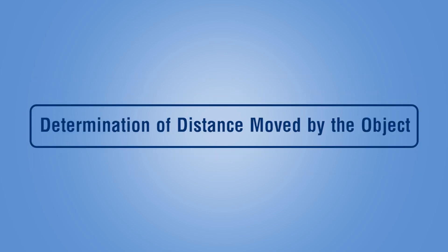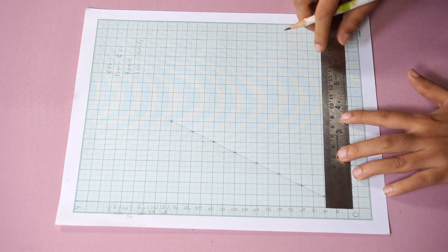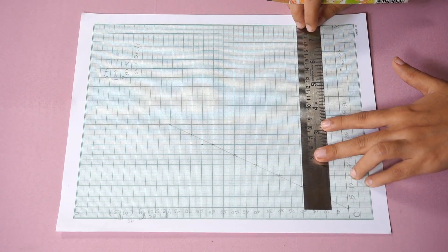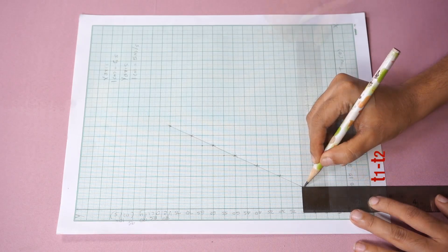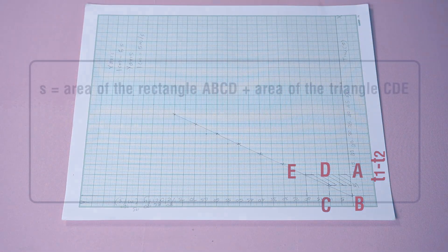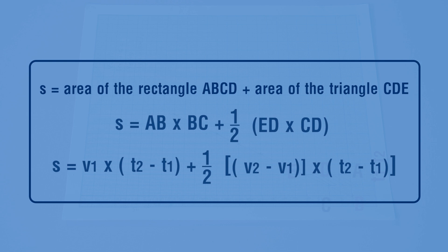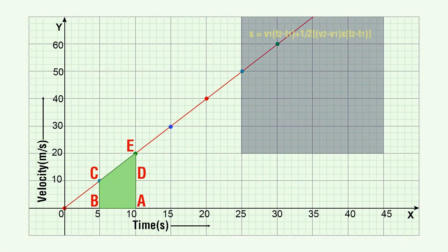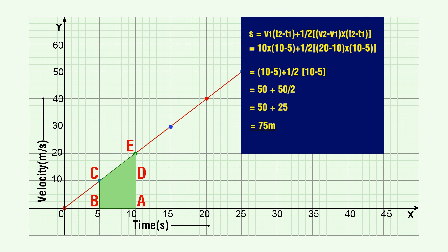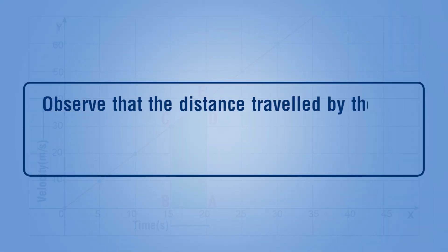Determination of distance moved by the object: for a given time interval, the area under the velocity-time graph gives the distance moved by the object. The distance s traveled by the car in a time interval (t2 minus t1) is given by the area ABCDE under the velocity-time graph — that is, s equals the area of rectangle ABCD plus the area of triangle CDE. Let us now determine the distance traveled by the object between 5 and 10 seconds. Calculate the distance traveled for 5 seconds, then repeat the calculation up to the final time.